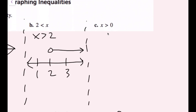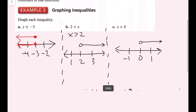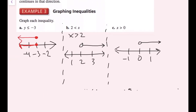Now we have x is greater than 0. Draw a number line with negative 1, 0, and 1. Since there is no 'or equal to,' this is just greater than, so put an open circle at 0. Since x is greater than 0, draw the arrow to the right for all values larger than 0. You might see the graph drawn directly on the number line or above it — either way is fine.